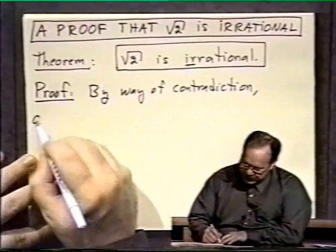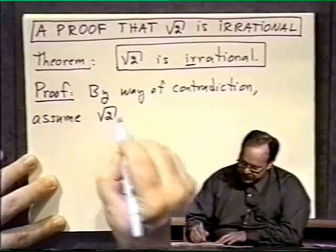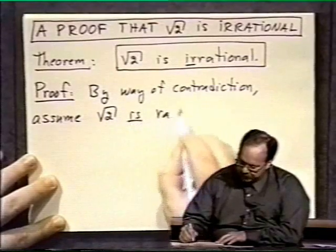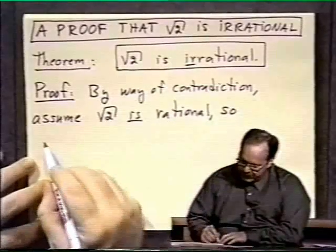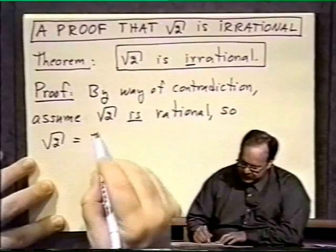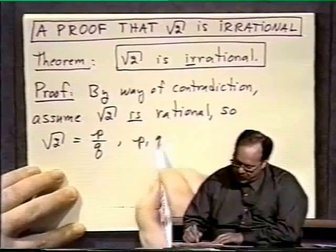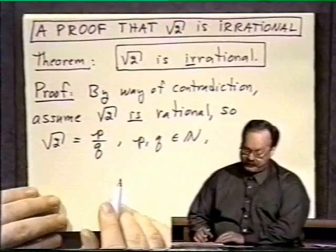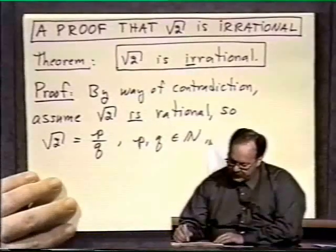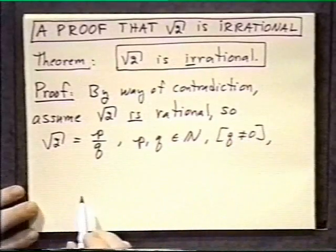By way of contradiction, let us assume that square root of two is rational. What does that mean? That means the square root of two is equal to p over q, where p and q are natural numbers. After all, we know the square root of two is positive, we don't have to worry about negatives. And of course, it goes without saying, although I'll mention it in case anyone wonders, that q is not zero.